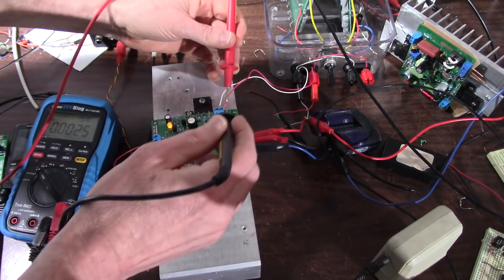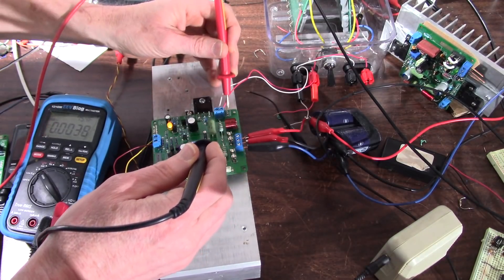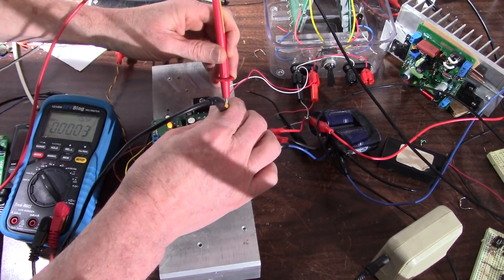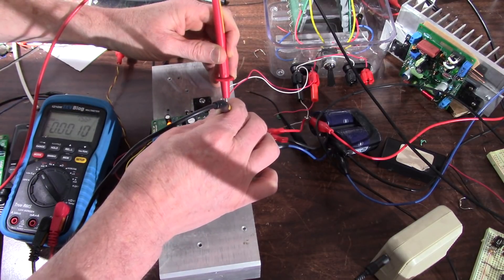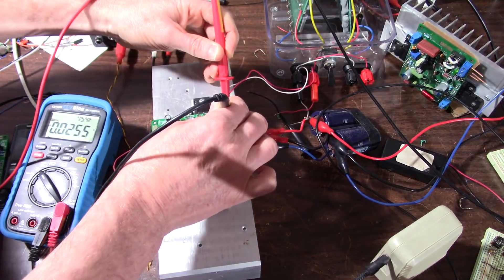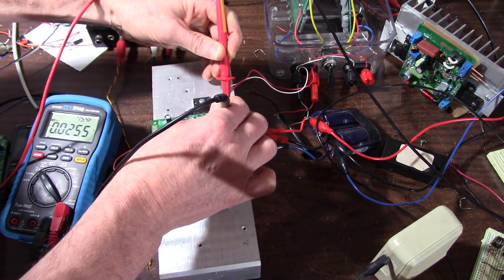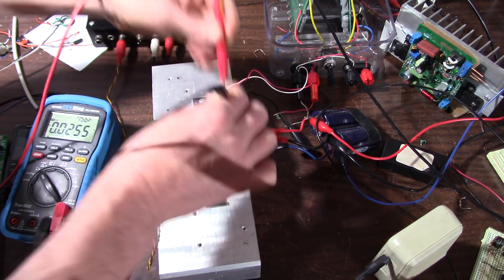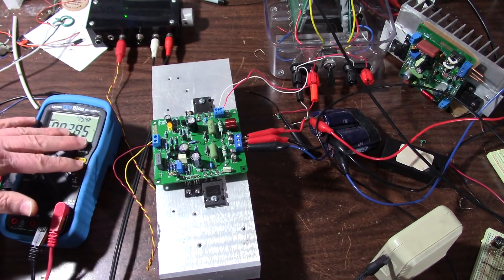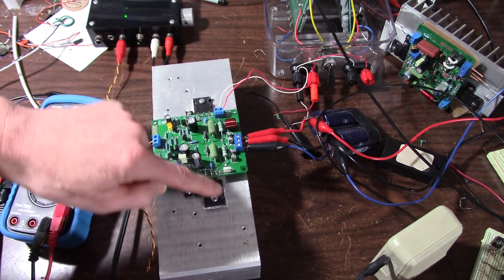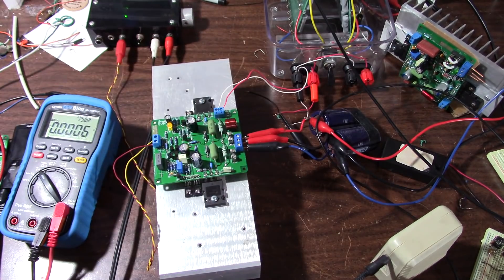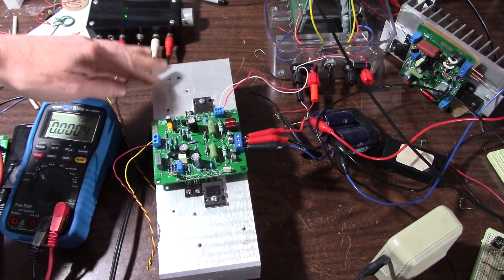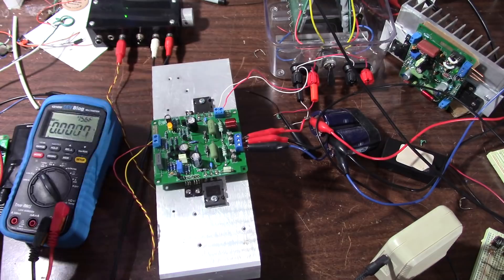Adjust that until you get 26 millivolts. So if I put the probes on this connection, you can see it's right now around 25.5. So at that level, the output stage bias would be around 60 milliamps, which I would say is good for eliminating crossover distortion.